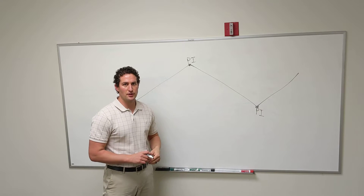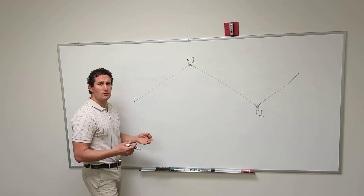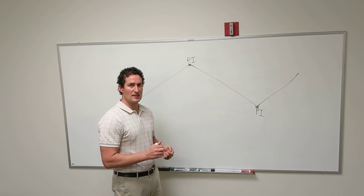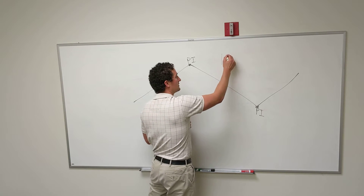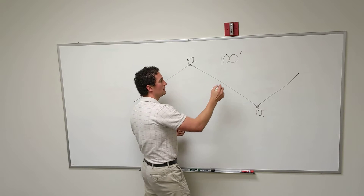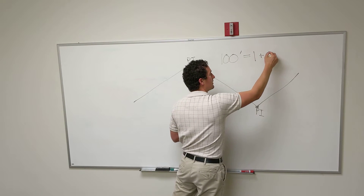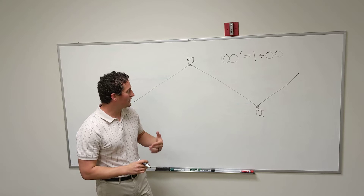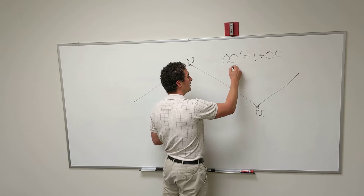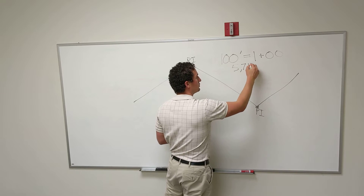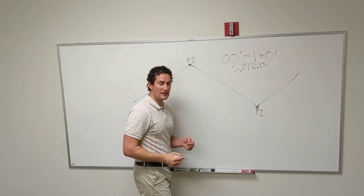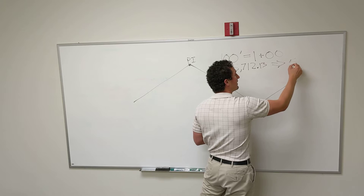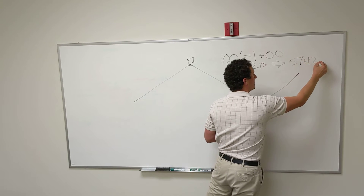This overall system is called the traverse, and a key thing to remember when working with the traverse is stationing — that's the distance along each of these line segments. For English units, we set our stationing where 100 feet equals one station, and we use the notation with the plus sign. So one plus zero zero is 100 feet, or one station. For example, a length of 57,012.13 feet is equivalent to station 57 plus 12.13.